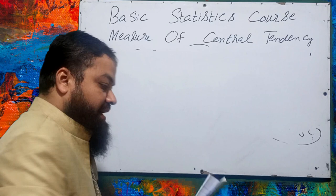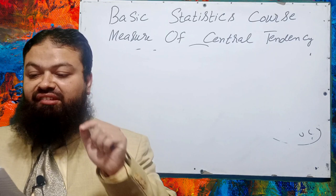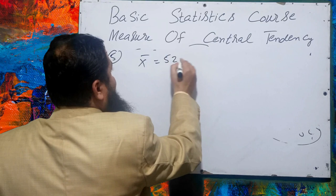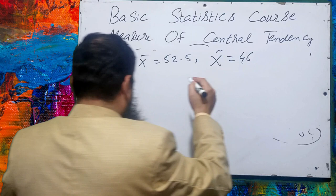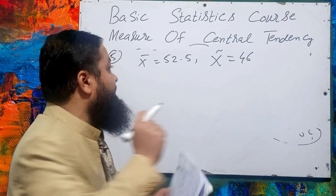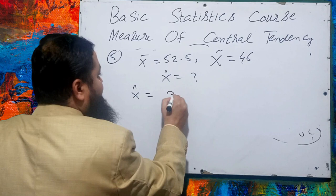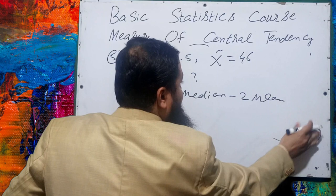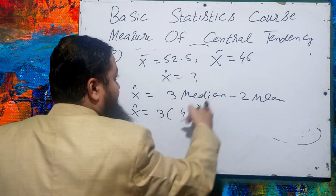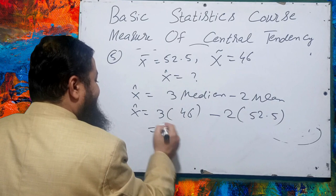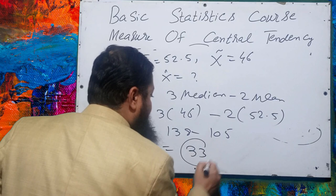Question number 5: a very important multiple choice question. For a frequency distribution, the mean is 52.5 and the median is 46. Find the approximate value of the mode using the empirical relation. Substituting: Mode = 3 × Median − 2 × Mean = 3 × 46 − 2 × 52.5 = 138 − 105 = 33. The answer is 33.